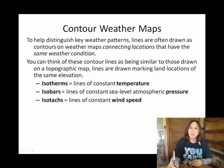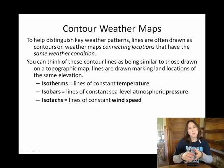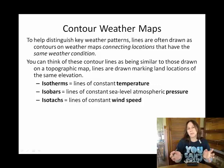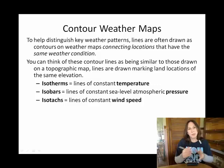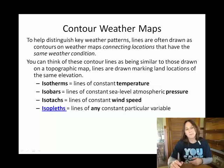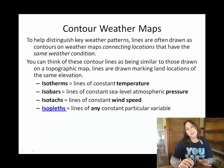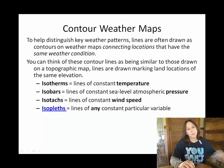If those lines are connecting locations with the same barometric pressure, we call those isobars. If those lines are connecting locations with the same wind speed, we call those isotachs. Just like in my example where I had to show that one contour line was 1,000 meters above sea level, followed by 900 and 800 meters, these contour lines need to be either directly labeled or you need to be able to infer what they are. Isotherms, isobars, and isotachs connect lines of equal temperature, pressure, and wind speed. We use the generic name isopleth for connecting lines of any particular atmospheric variable.